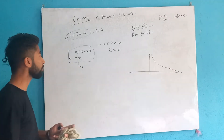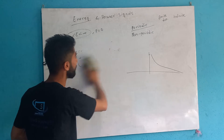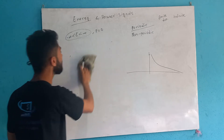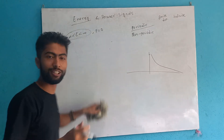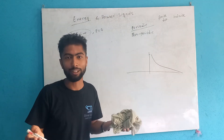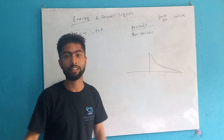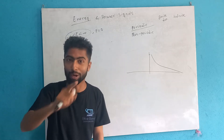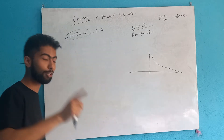With the first definition: the power is infinite — and this is the power signal. The power is zero.